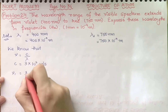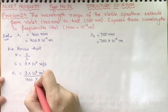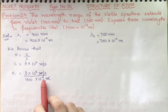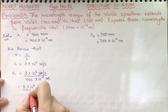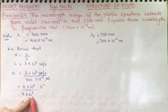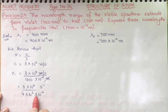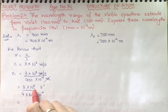Nu one equals c, that is 3 into 10 raised to power 8 meters per second, divided by lambda, that is 400 into 10 raised to power minus 9 meter. We cancel meter with meter. Writing this as 3 into 10 raised to power 8 per second, divided by 4 into 10 raised to power 2, into 10 raised to power minus 9. The plus 2 in the denominator becomes minus 2 in the numerator, and the minus 9 in the denominator becomes plus 9 in the numerator.